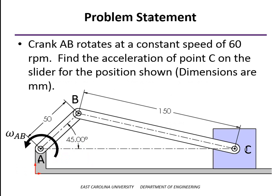Going back to the problem statement, as with the velocity analysis, the same mechanism we're looking at: a 50mm crank, a 150mm connector, and a slider block at C. The crank is rotating at 60 RPMs, and for the accelerations we have to know that that is a constant speed.